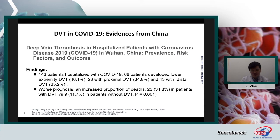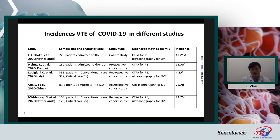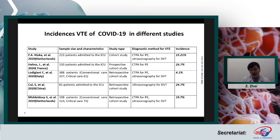Looking at studies from around the world — from the Netherlands, France, China, and Italy — we found the incidence of DVT and PE ranges from 4% to 24%, which is very high. But this is not the final data, because not all patients were examined with ultrasound or CT pulmonary angiogram. This means the true incidence might be much higher than what has been reported, and we should pay more attention to this.